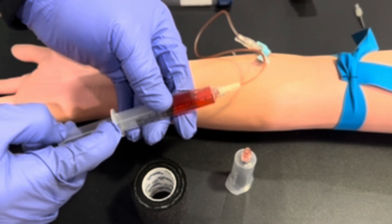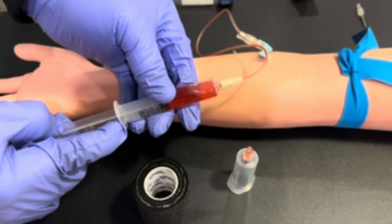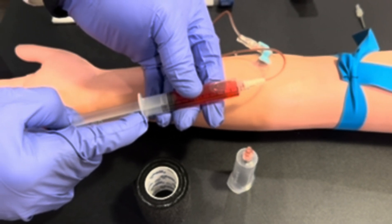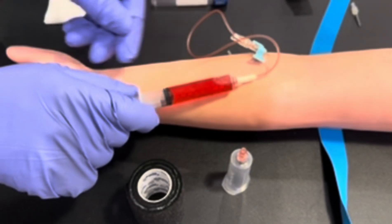Slowly pull back on the plunger and allow blood to fill into the syringe. After blood has filled up inside the syringe, release your tourniquet.